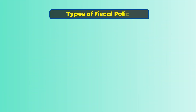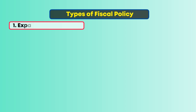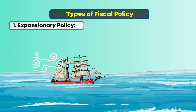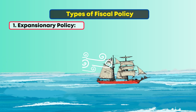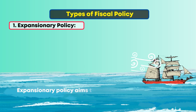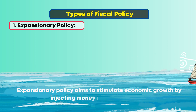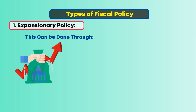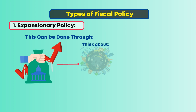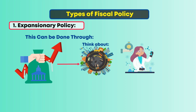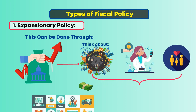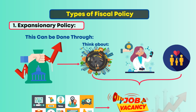Now let's explore the main types and how they can affect our economic journey. First, Expansionary Policy. Imagine a gentle breeze filling the sails, propelling the ship forward. Expansionary policy aims to stimulate economic growth by injecting money into the economy. This can be done through increased government spending — think infrastructure projects, research grants, or social programs — injecting money directly into various sectors, creating jobs and boosting demand.